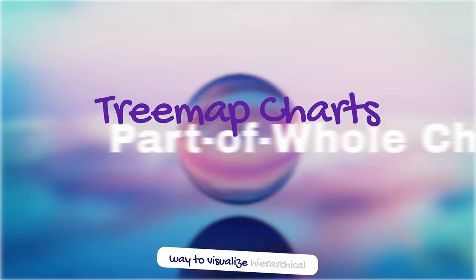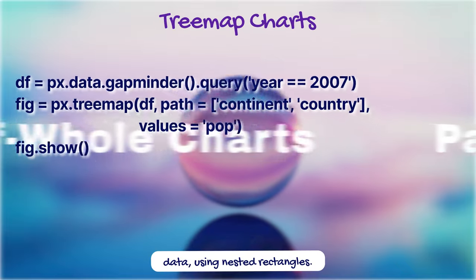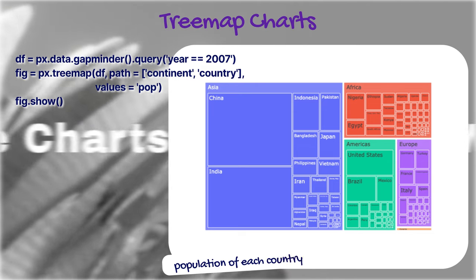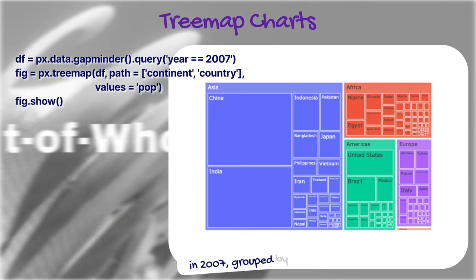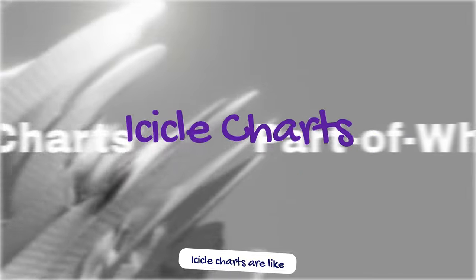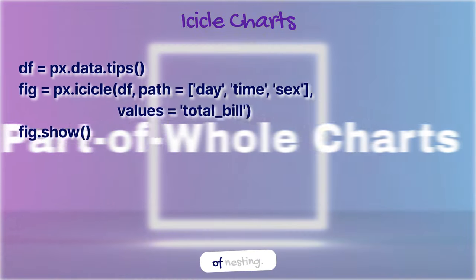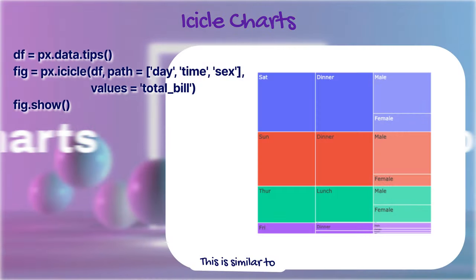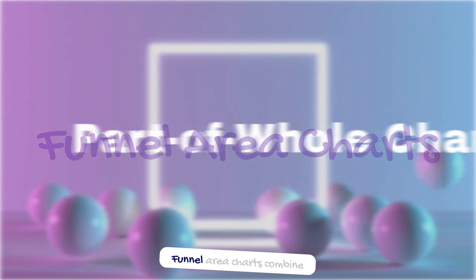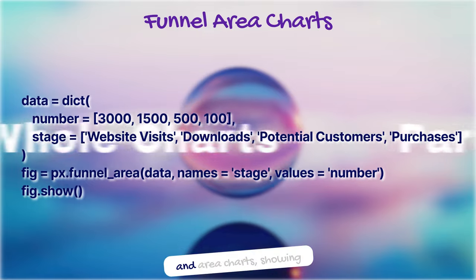Tree maps are another way to visualize hierarchical data using nested rectangles. This code creates a tree map showing the population of each country in 2007, grouped by continent. Icicle charts are like tree maps but use a linear layout instead of nesting. This is similar to the sunburst example but displayed as an icicle chart.